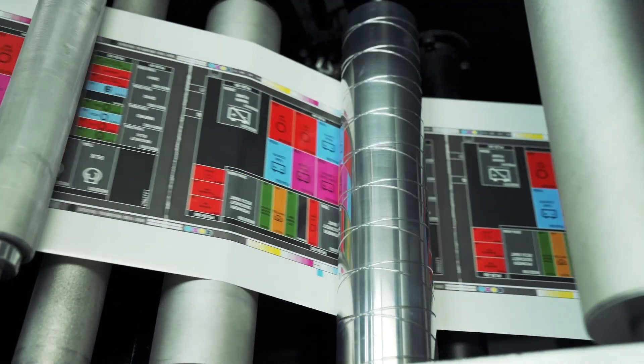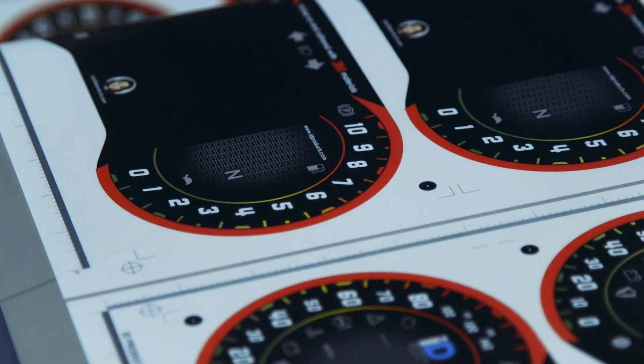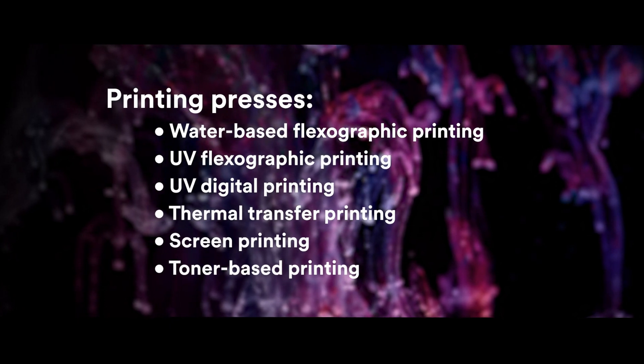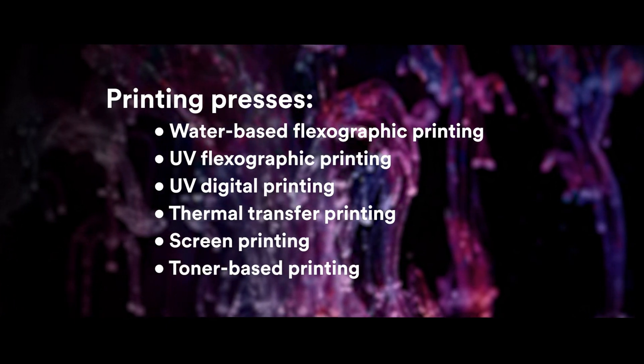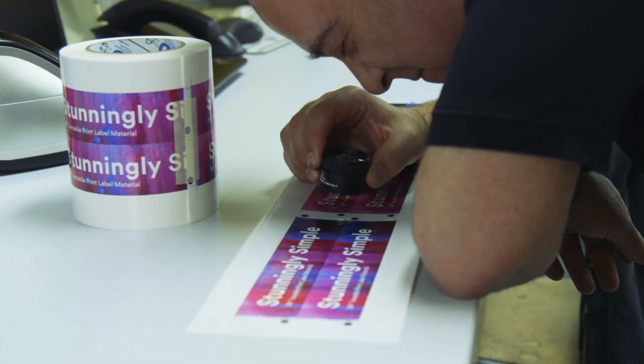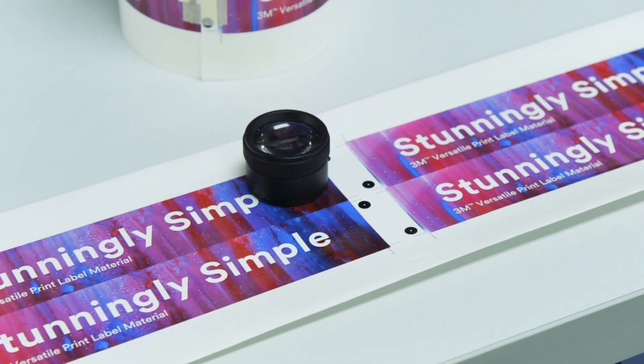3M Versatile Print's top coat works with more inks on more types of presses, so it's ideal for traditional printing or if you're transitioning to digital printing technology. You can trust 3M Versatile Print Label Material for the quality, adaptability, and durability you need for your customers' most demanding applications.